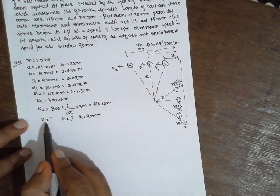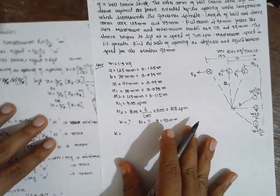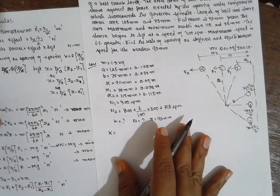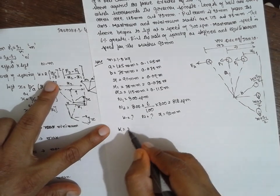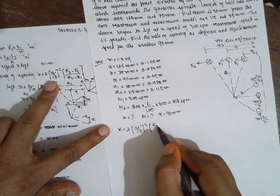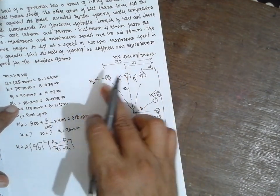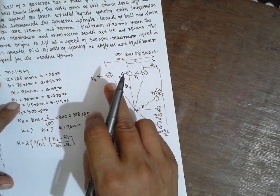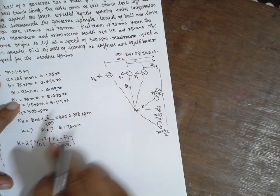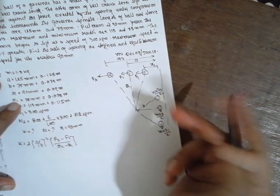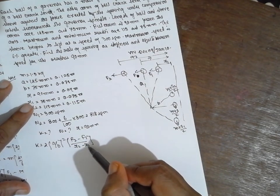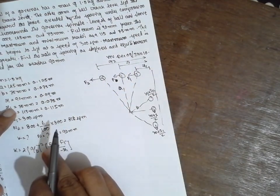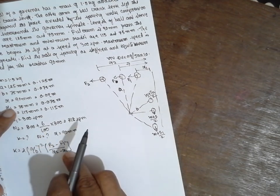Now I will substitute the value of K. The formula for stiffness K is: 2 into (A divided by B) whole square, multiplied by (F2 minus F1) divided by (R2 minus R1). Here the comparison is between maximum and minimum. If the comparison is between maximum and mean, you write F2 minus F over R2 minus R. If between mean and minimum, you write F minus F1 over R minus R1. Here we compare maximum to minimum, so we use F2 minus F1 over R2 minus R1.